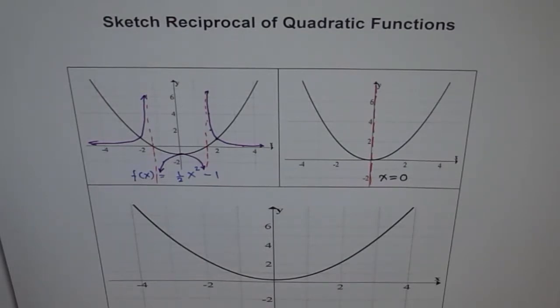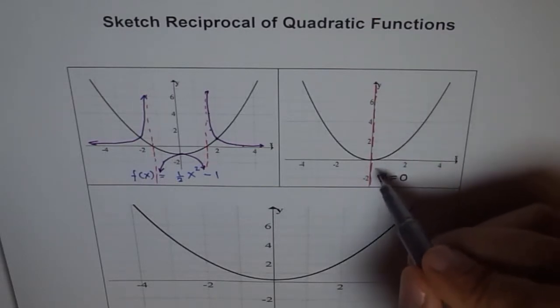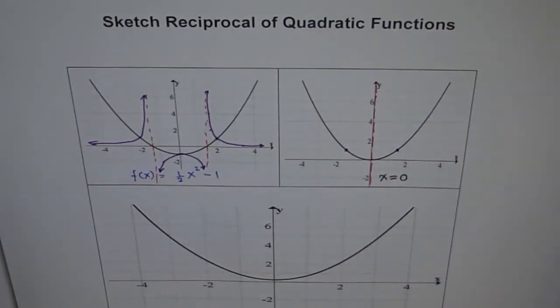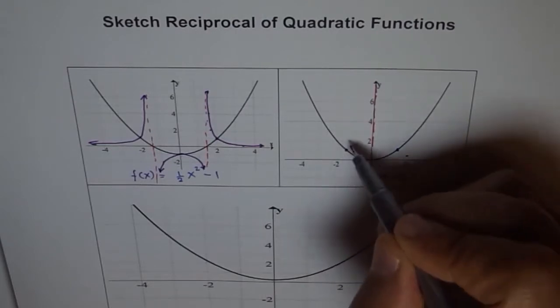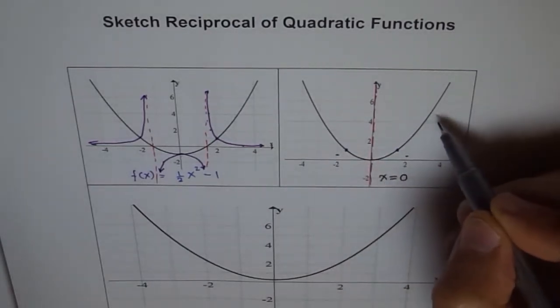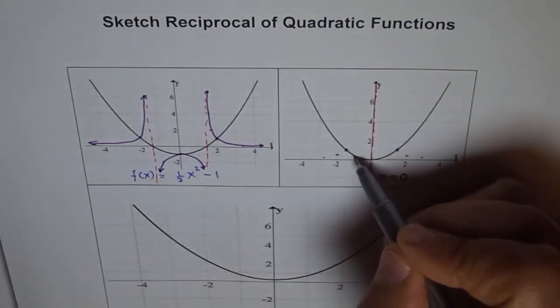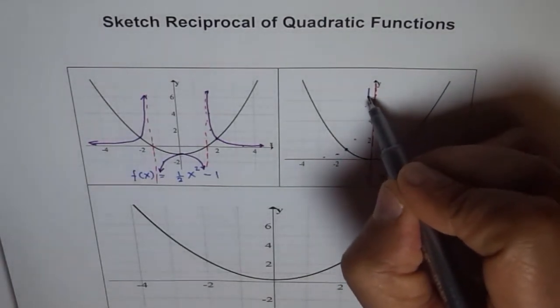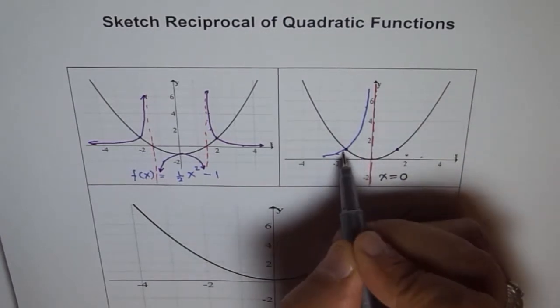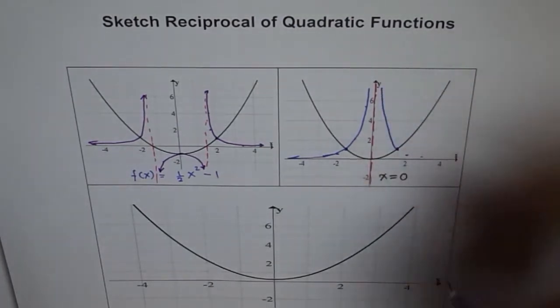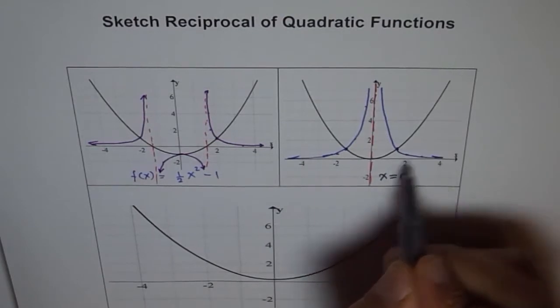And now to draw this reciprocal, what am I going to do? I am looking first for the point where it is one. Here it is. So these are my ones. So they will always remain common to both the functions. Then two, reciprocal of two will be half. And then let's go for four. Four is here, one-fourth, so it is very close to the line. And here we can look for half which will give me two. And this is very close. So we will just join these lines. As you see, it will not touch x-axis. It will go very, very close to it though.